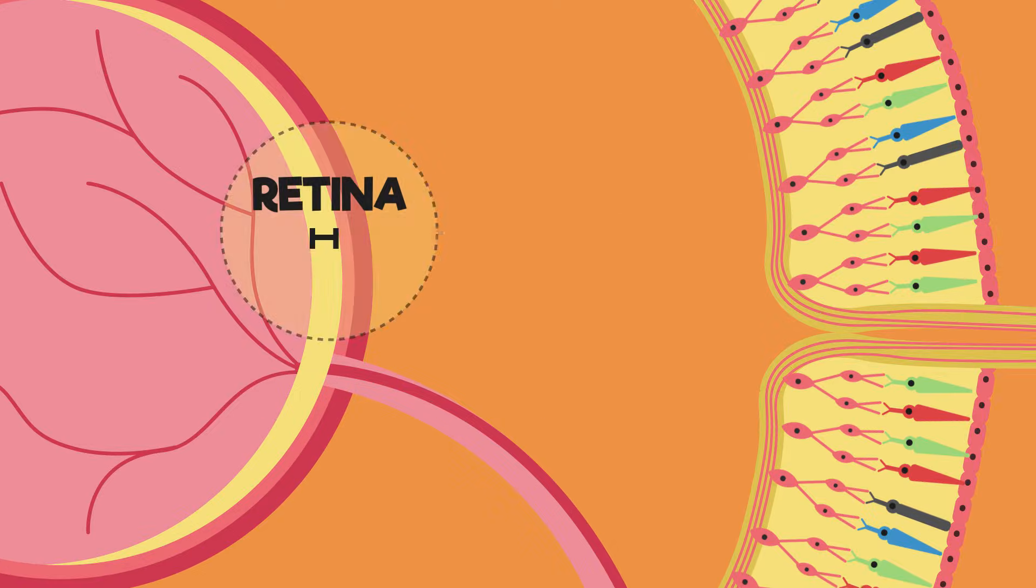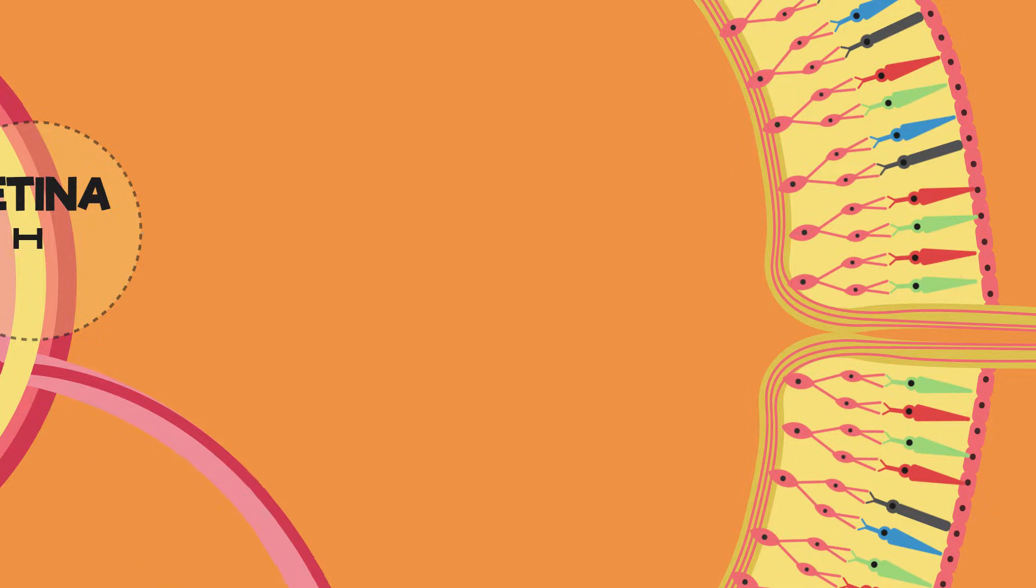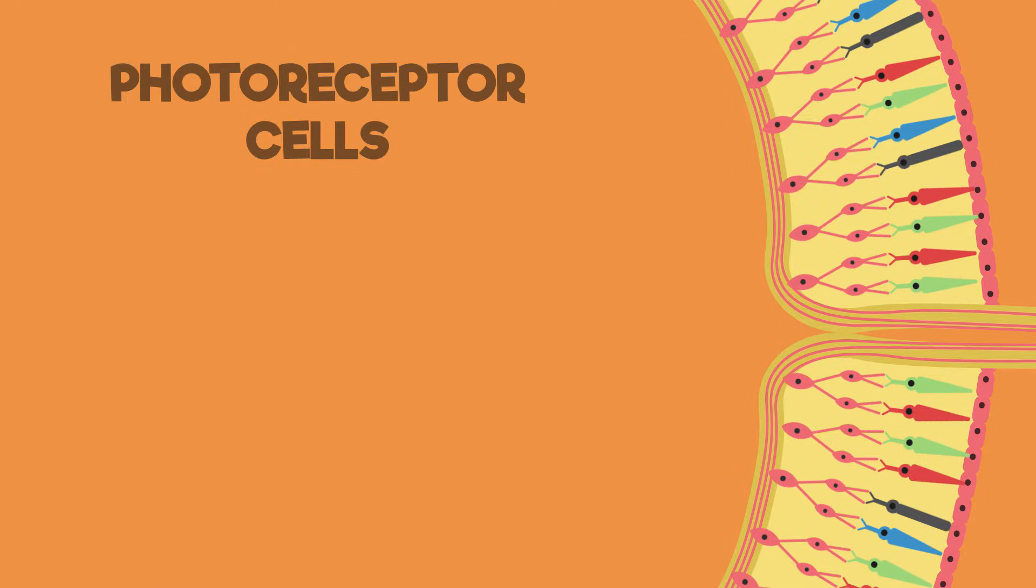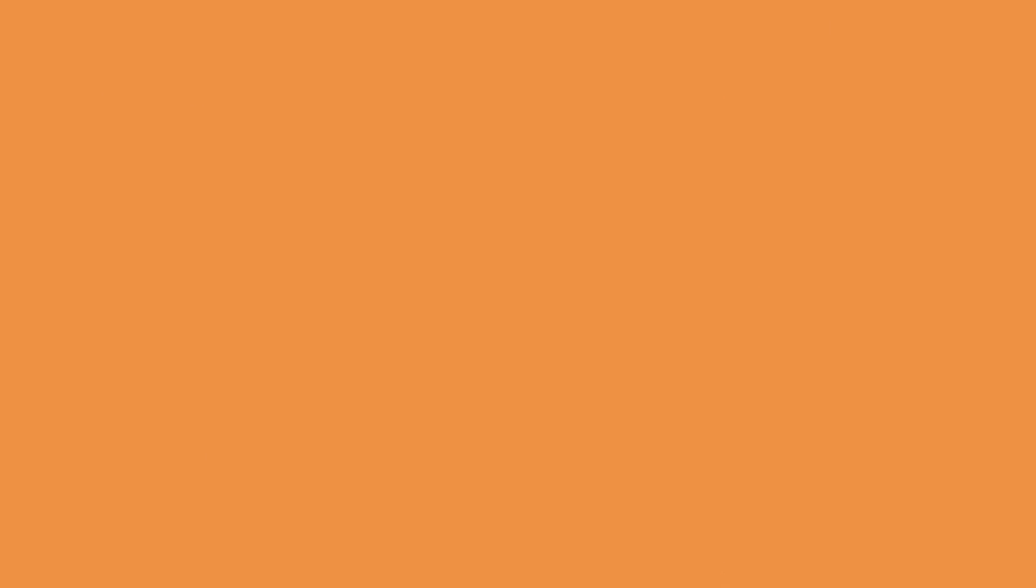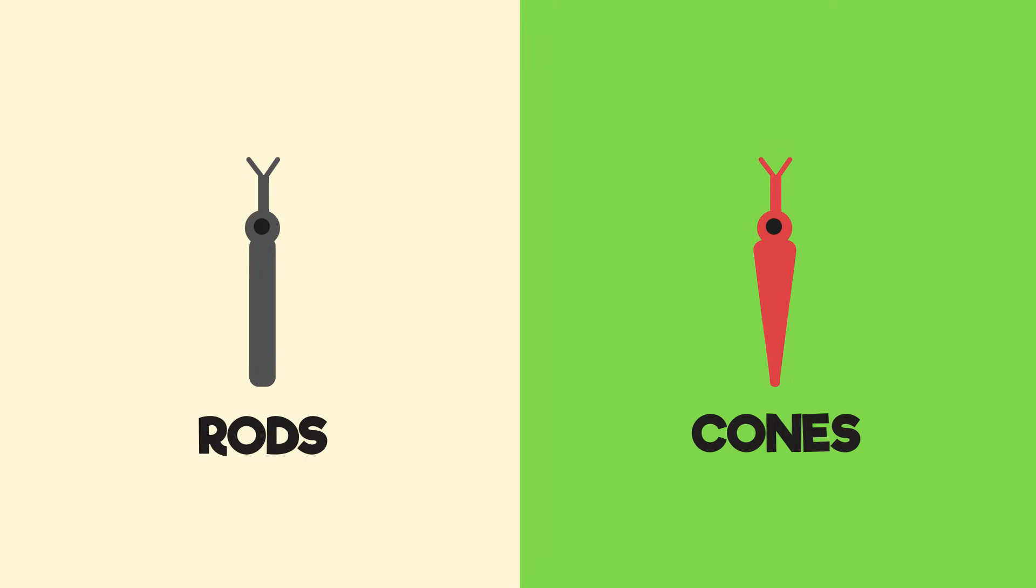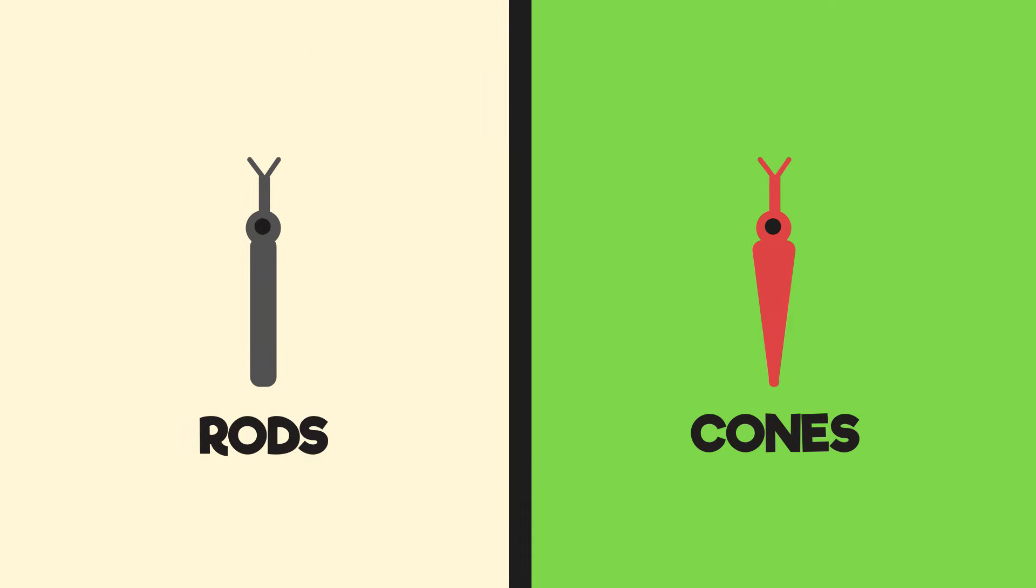The retina at the back of the eye contains a thin lining of special cells called photoreceptor cells. There are two types of photoreceptor cells, the rod cells and the cone cells. They have distinctive shapes and are sensitive to different kinds of light.